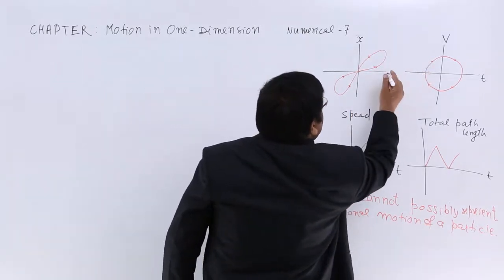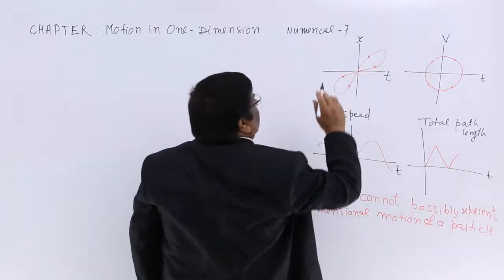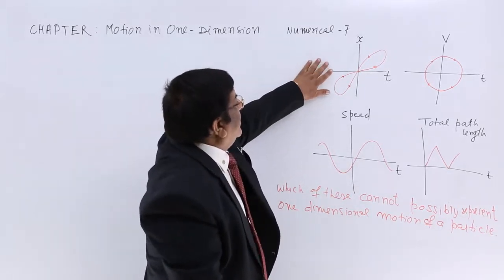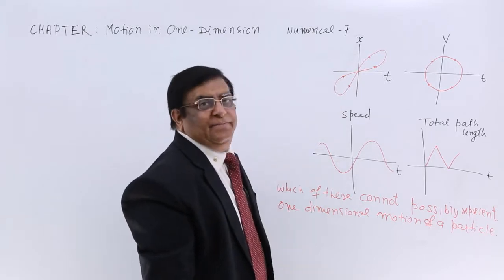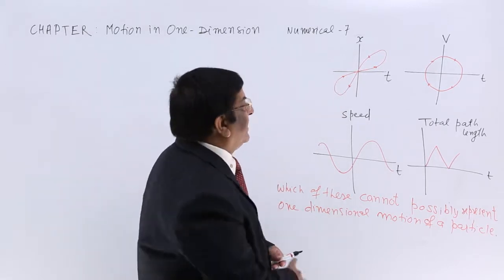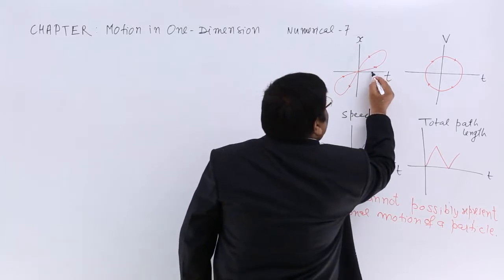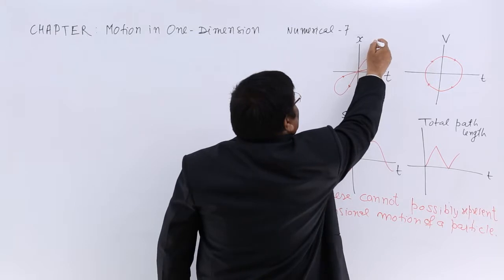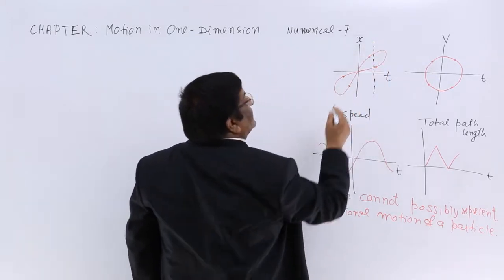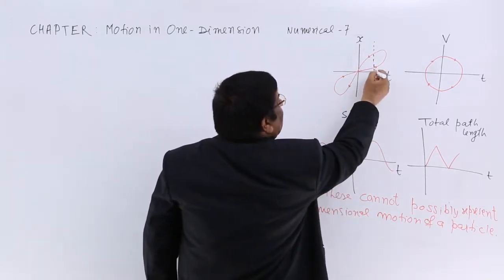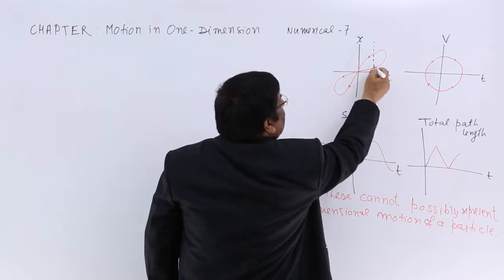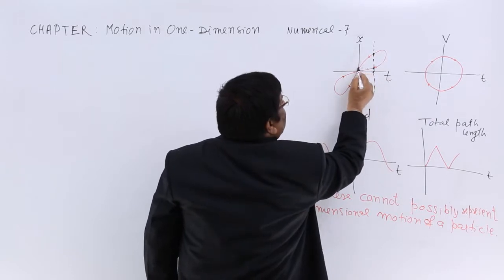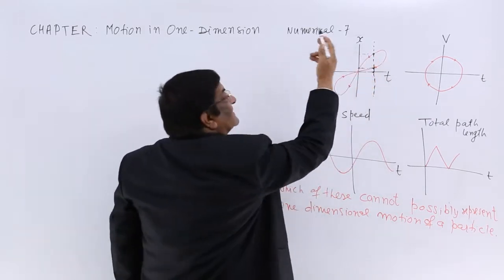So here this is time and this is position, time and position graph. Is it possible or is it not possible? Now here we find one ambiguity at a particular instant. Where is the particle? So at this instant we draw this line. The graph is giving us information that at this instant the particle is here and the particle is here. This says one centimeter and this says six centimeter.